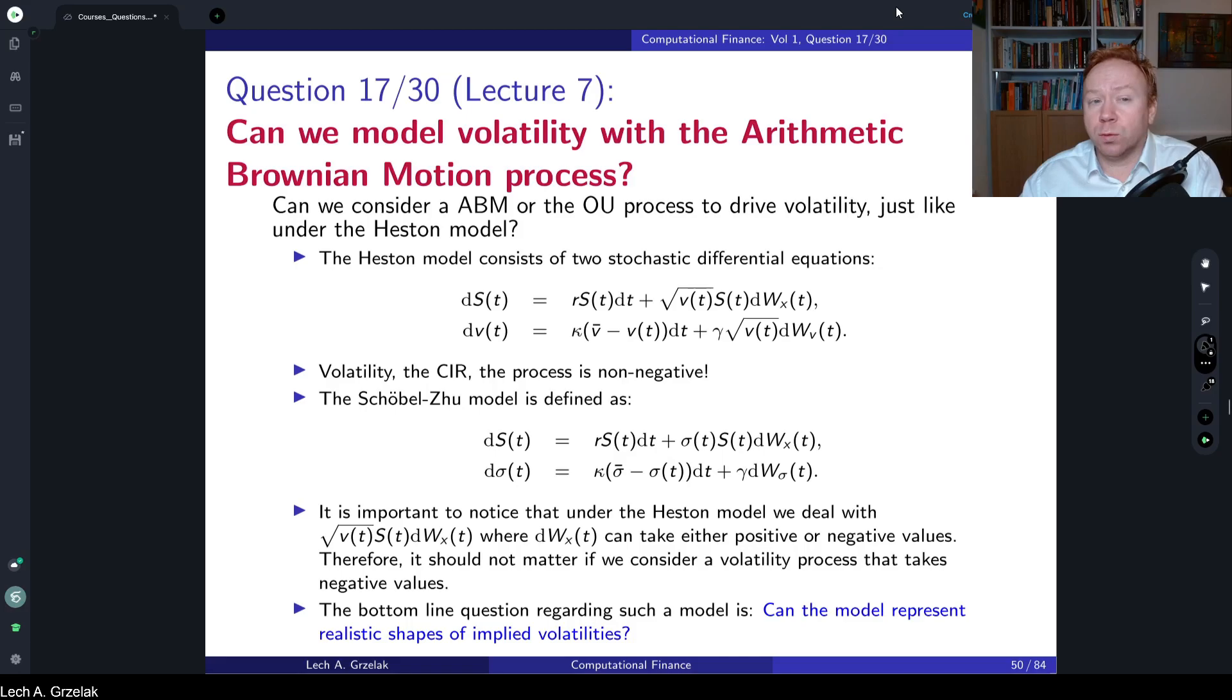The question of today is can we model volatility with the arithmetic Brownian motion process. In the course we have learned a lot about the stochastic volatility models, like for example the Heston model where we have seen the impact of different model parameters on implied volatility surface. And we have illustrated the advantage of having a CIR type of process for the variance in the Heston model.